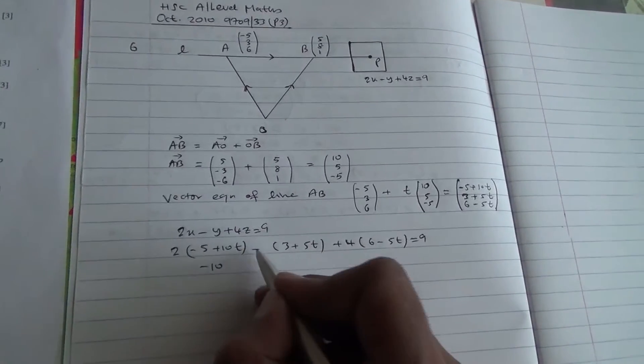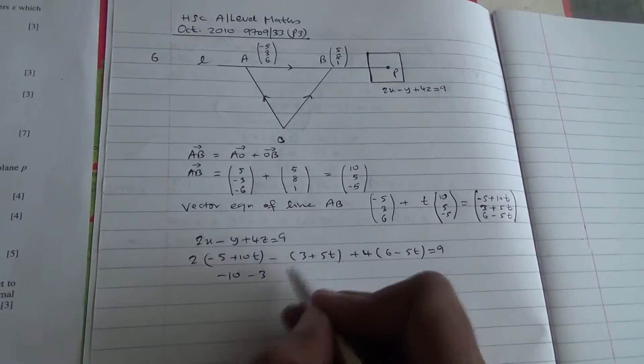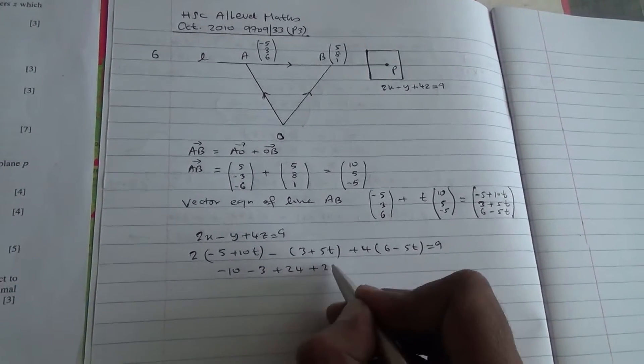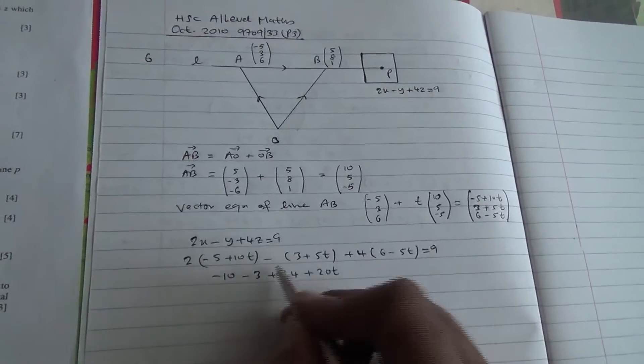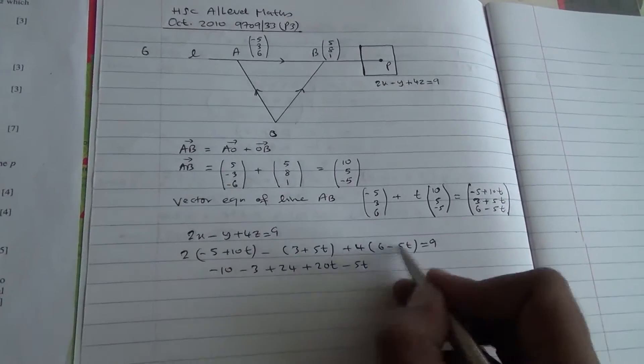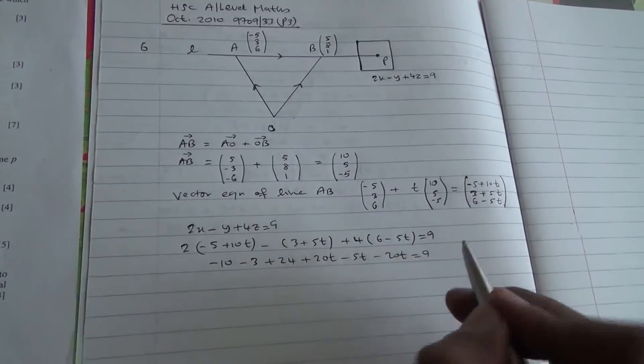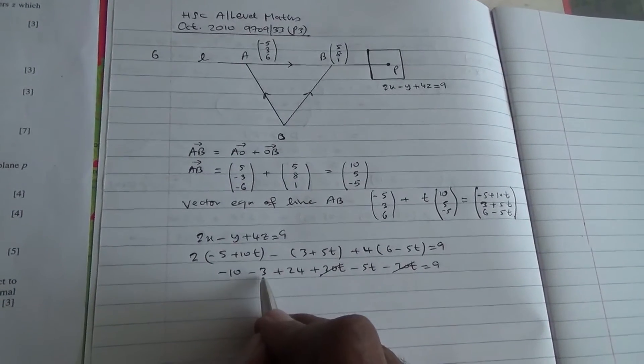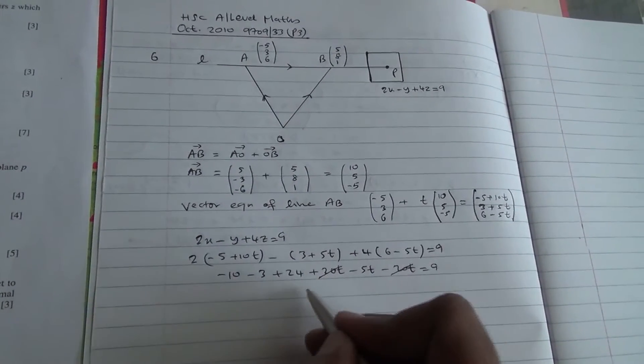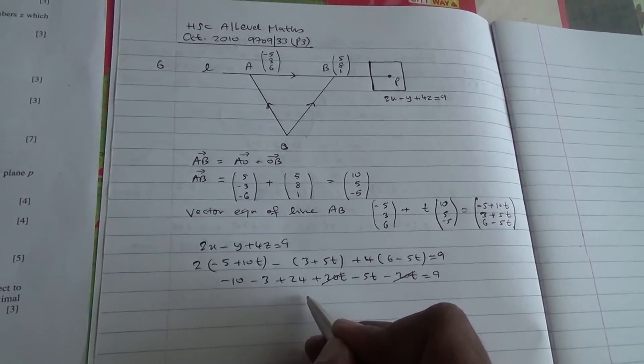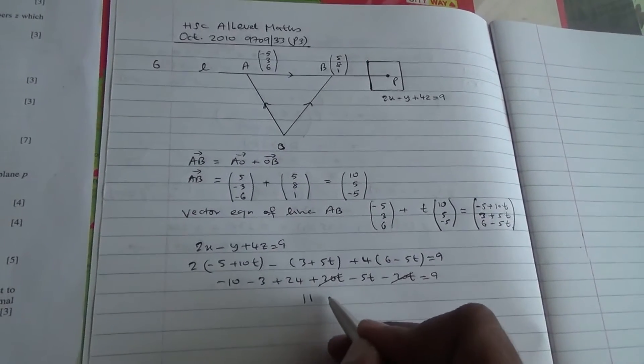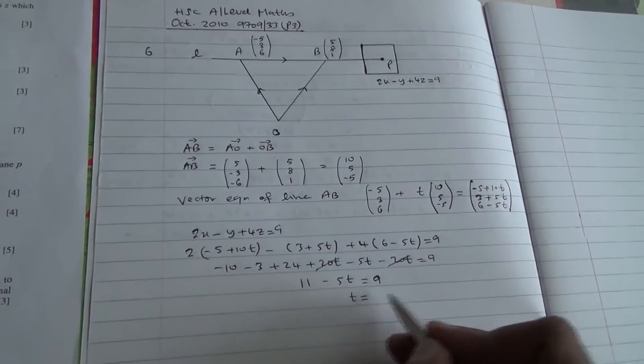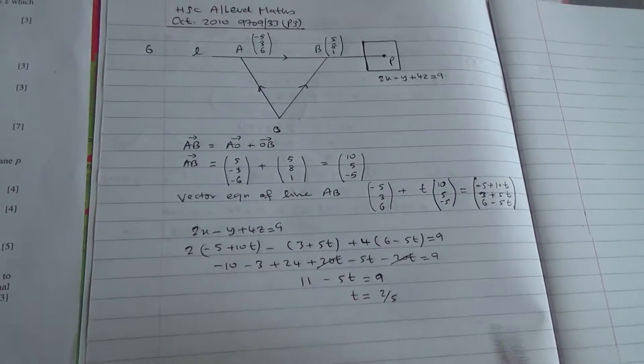-2 times 5 is -10, -3 times 1 is -3, 4 times 6 is 24, 2 times 10 is +20T. -5 times T is -5T, 4 times -5T is -20T, and all of that's going to be equal to 9. +20T - 20T cancels out. -3 - 10 + 24 is basically 11, and you have -5T = 9. Solving that equation, T is going to be 2/5.